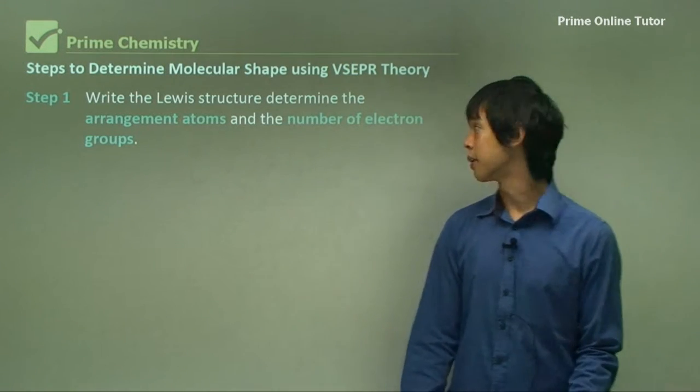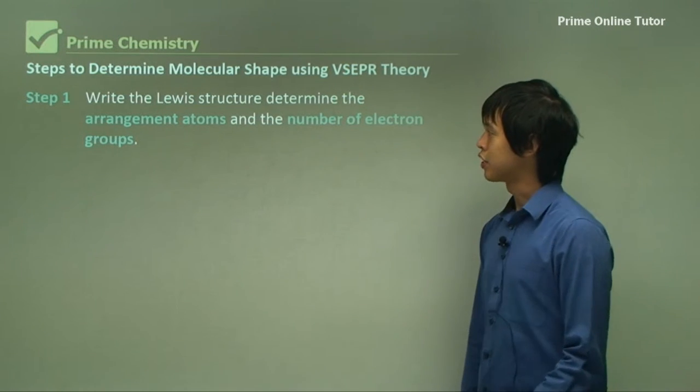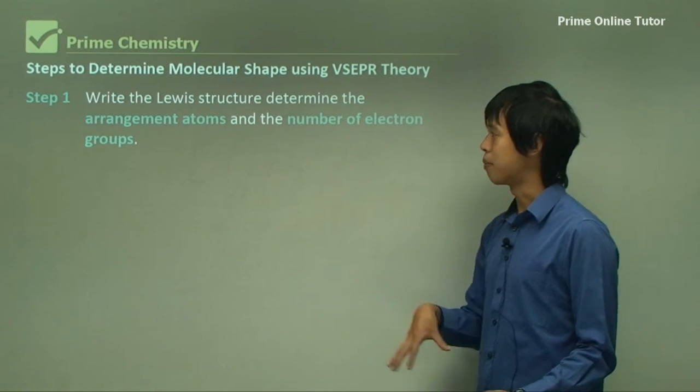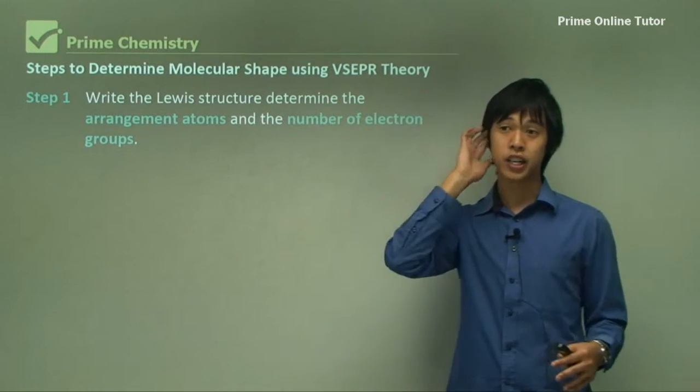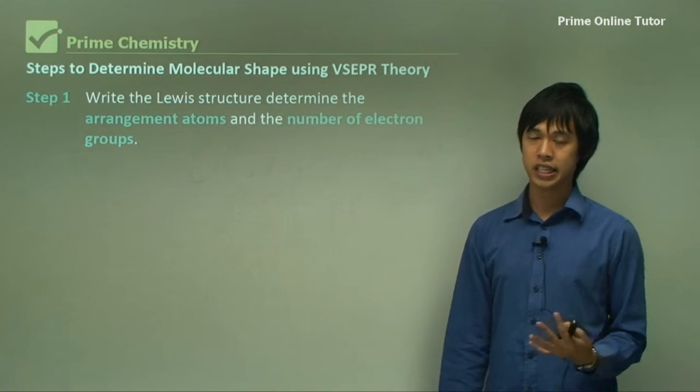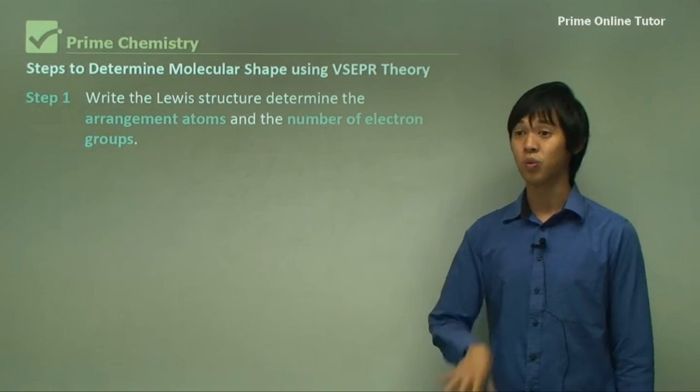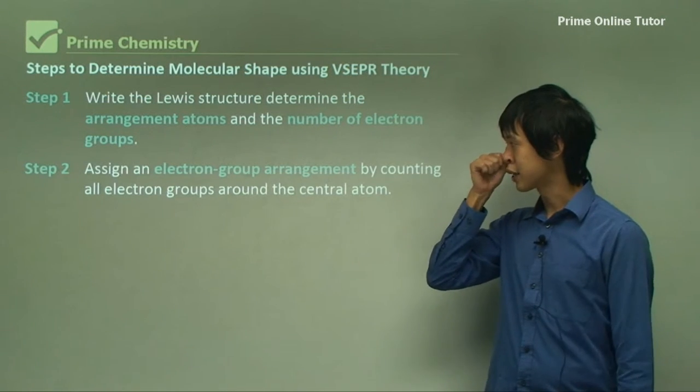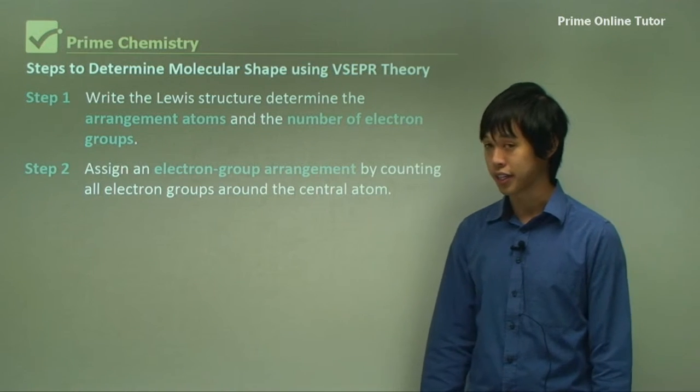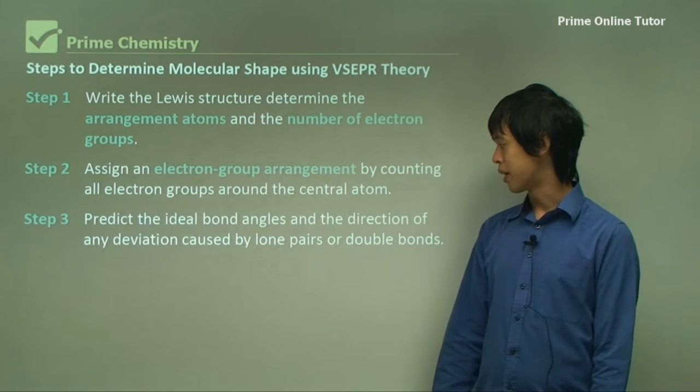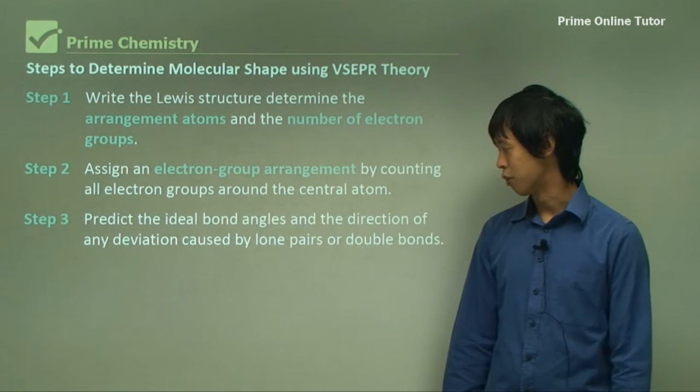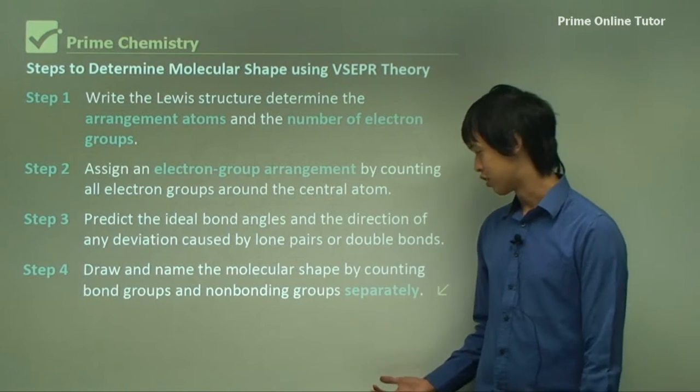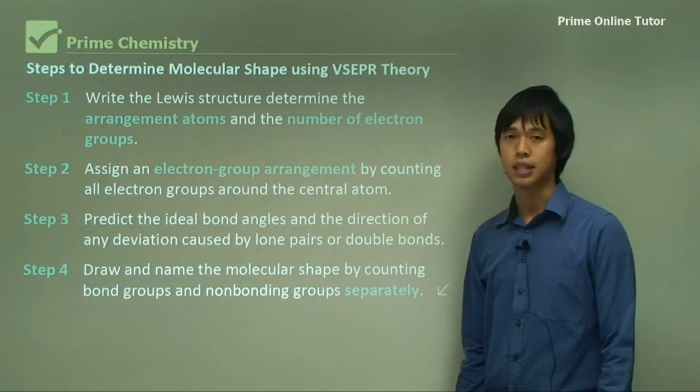So the steps to determine the molecular shape using VSEPR. So we write out first the Lewis dot diagram, and determine the arrangement of atoms and the number of electron groups. So we just draw it, any shape, just two-dimensional, 90 degree type stuff, and then just put it down and see what's there and where all the lone pairs of electrons are and things like that. Assign an electron group arrangement by counting all electron groups around the central atom. Predict the ideal bond angles and the direction of any deviation caused by lone pairs or double bonds. So double bonds and lone pairs exert slightly different forces. And then draw and name the molecular shape by counting bond groups and non-bonding groups separately.